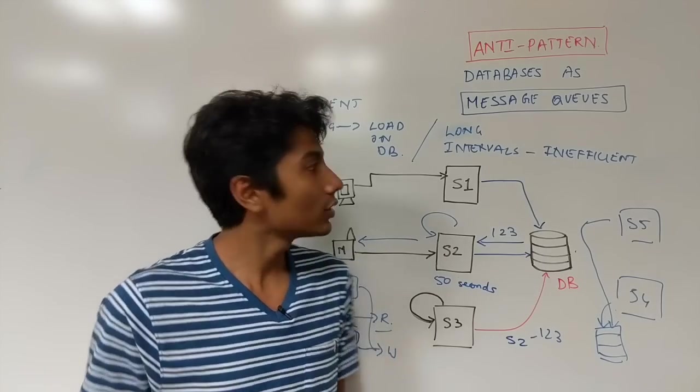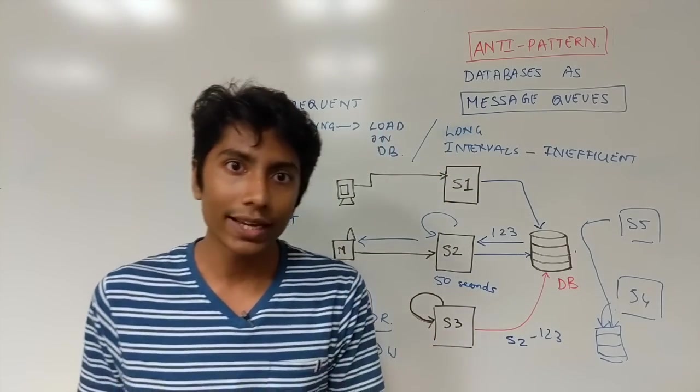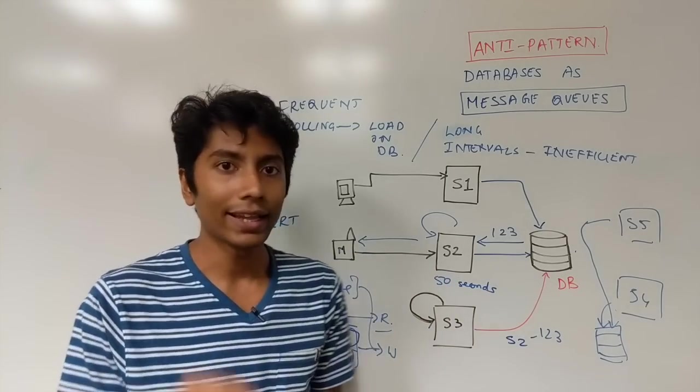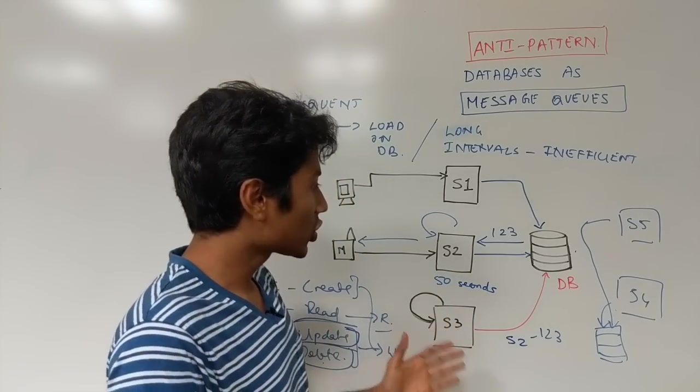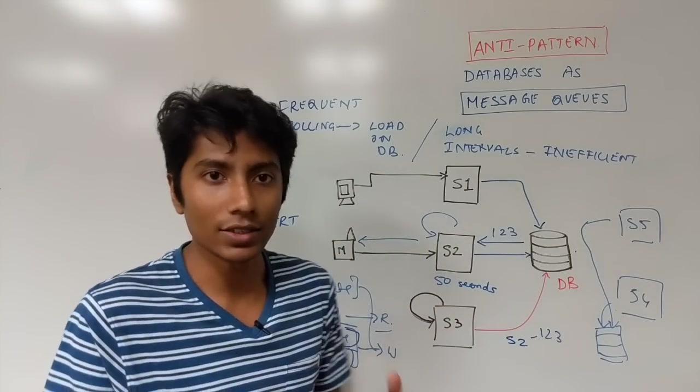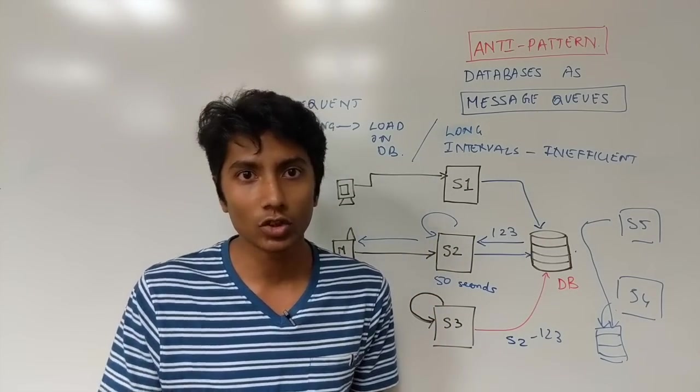So the anti-pattern here is that we are using databases as message queues. Instead, we should use specialized message queues when we have a very large system. Okay? There's a star over there when we have a very large system. Message queues are going to avoid all of these problems. The polling interval is not going to come into consideration because message queues push the message to the other server.